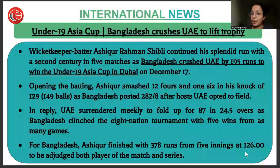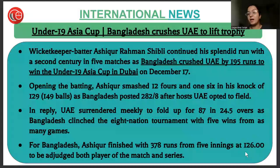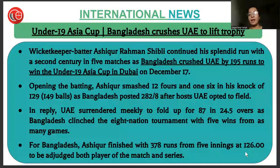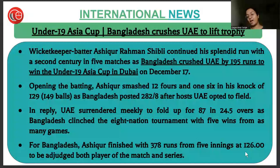In the Under-19 Asia Cup, Bangladesh crushed UAE by 195 runs to win the trophy in Dubai. Wicketkeeper-batter Mushfiq ur Rahman Shibley continued his splendid run with a second century in five matches. Shibley finished with 378 runs from five innings at an average of 126.00, being adjudged both Player of the Match and Player of the Series.